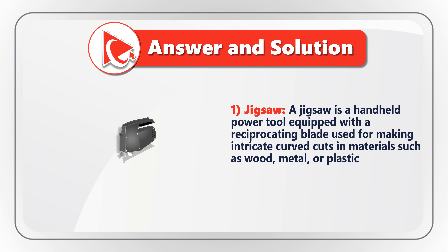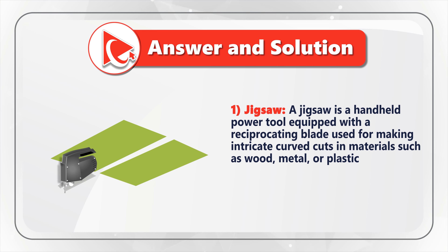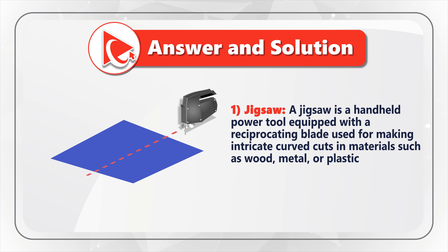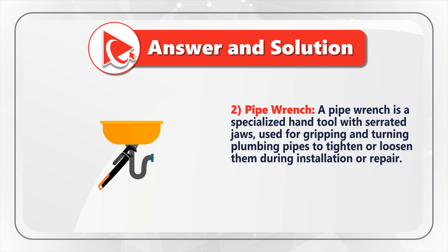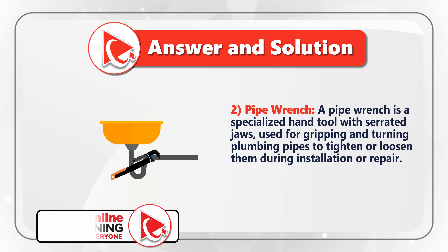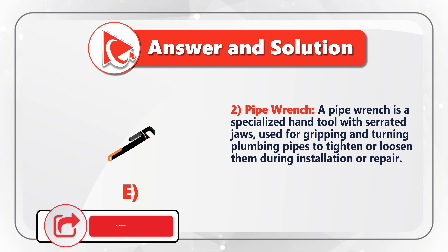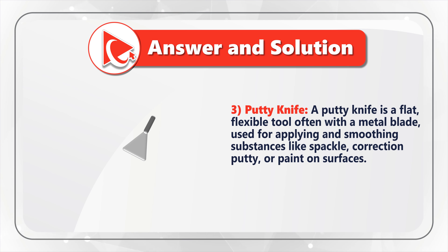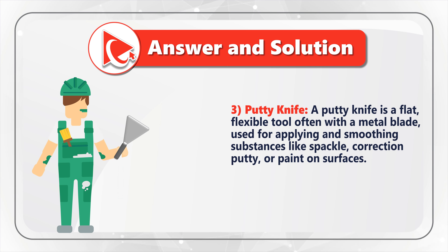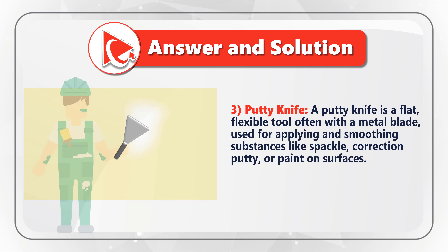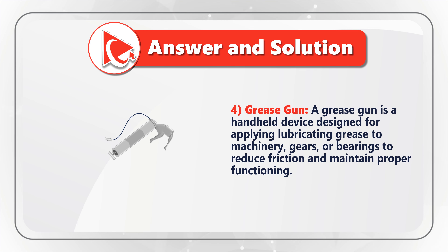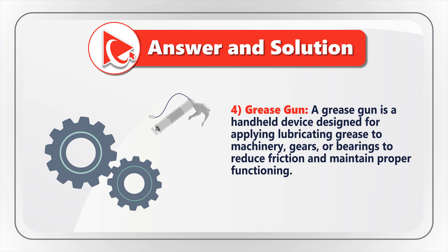Let's start with choice one. The description matches a jigsaw — a handheld power tool equipped with a reciprocating blade used for making intricate curved cuts in materials such as wood, metal, or plastic. Description one matches image B. Choice two matches the pipe wrench — a specialized hand tool used for gripping and turning plumbing pipes to tighten or loosen them during installation or repair. Description two matches image E. Description three matches a putty knife — a flat, flexible tool with a metal blade used for applying and smoothing substances like spackle, correction putty, or paint on surfaces. Description three matches choice C.